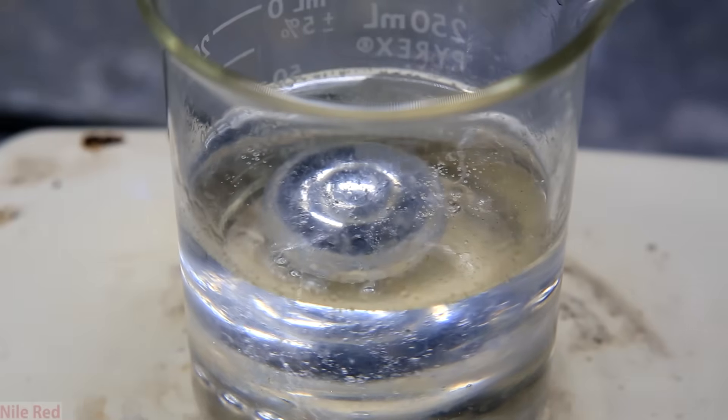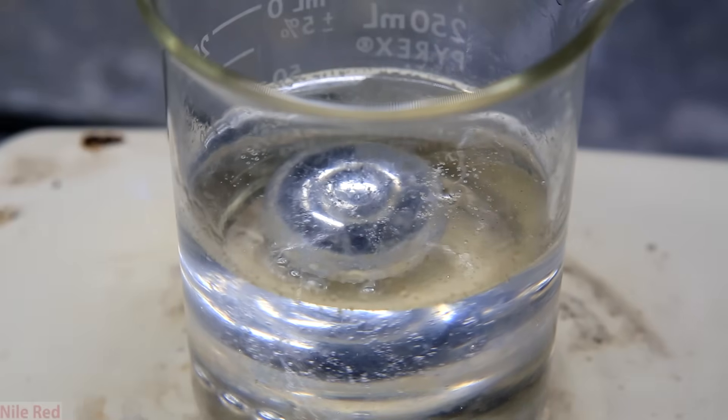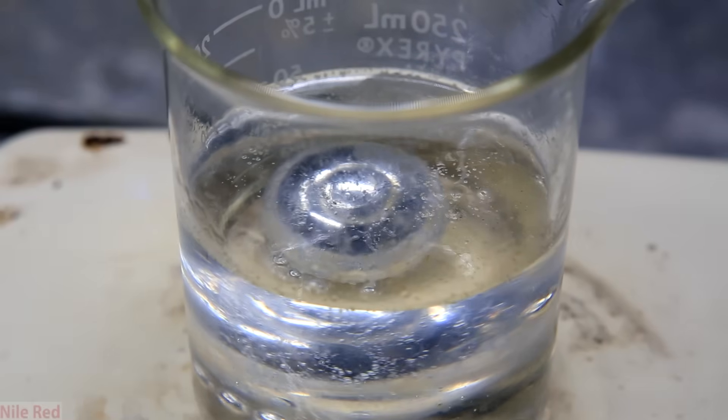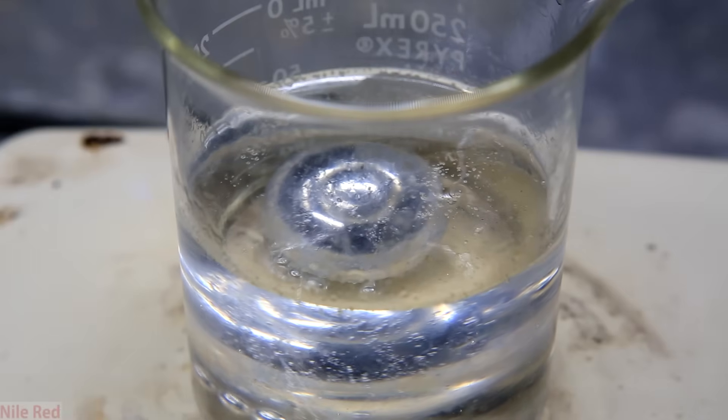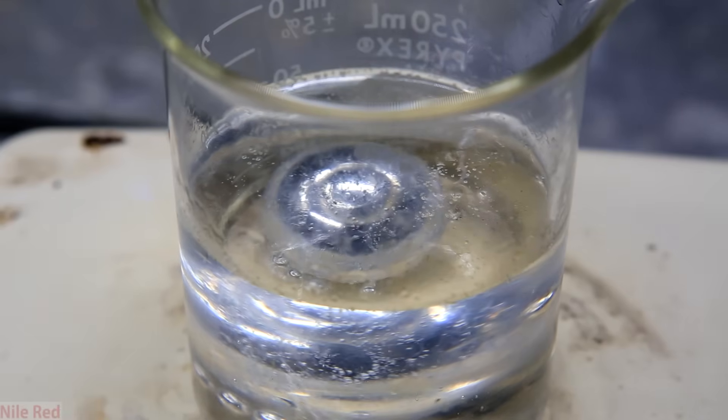One unfortunate thing when using mineral oil is that the potassium would float in it and a little bit of it is exposed to air. It's not really dangerous, but this part that's exposed might be a little discolored compared to the rest.